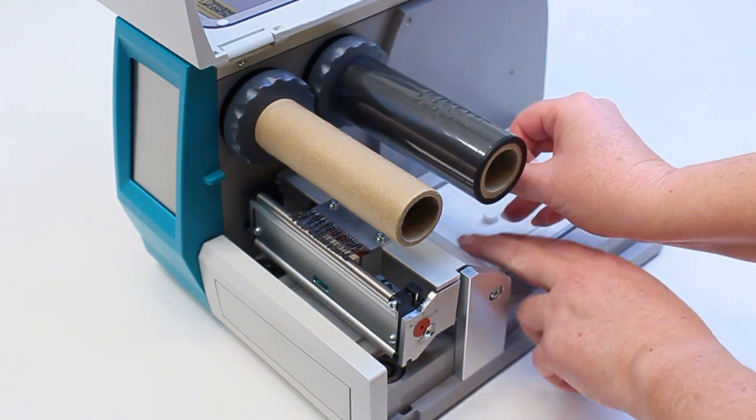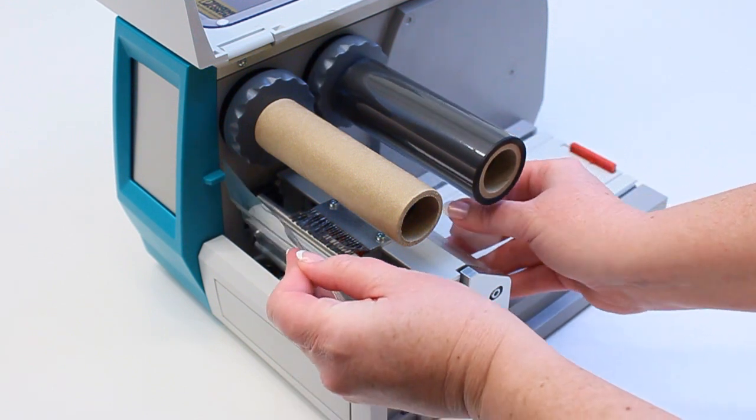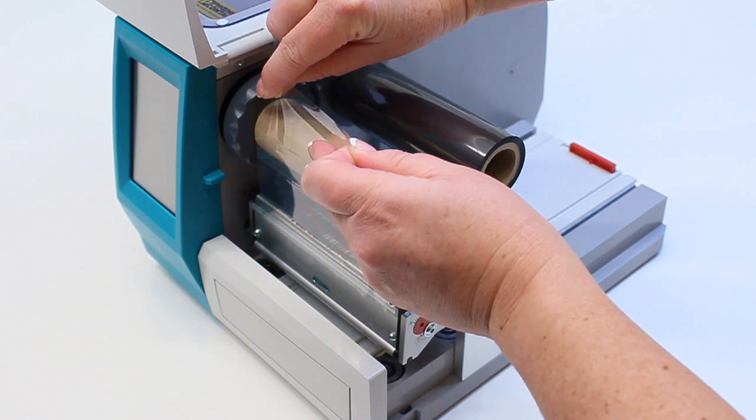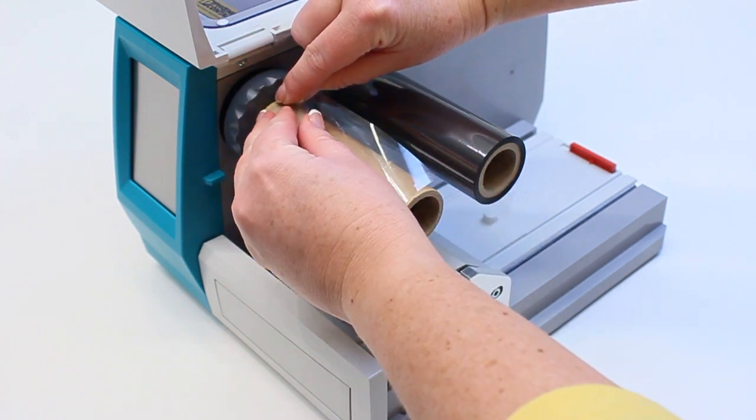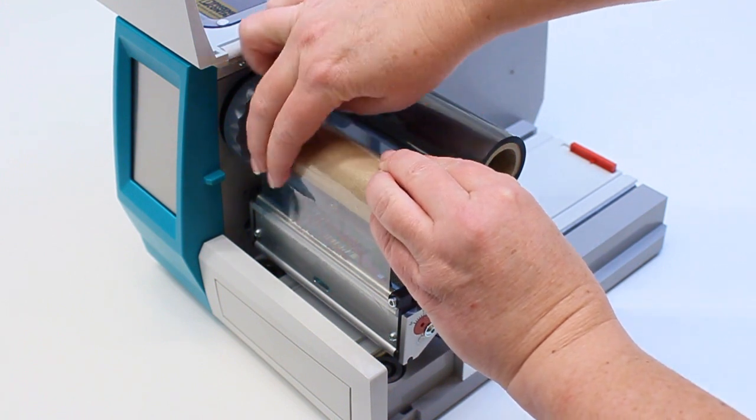Thread the loose end under the print head. Secure the plastic to the take-up core. Again, if you're not using a brand new ribbon, a piece of tape can be used.